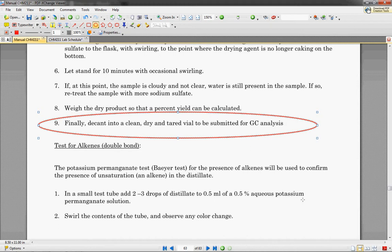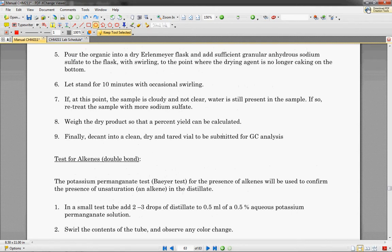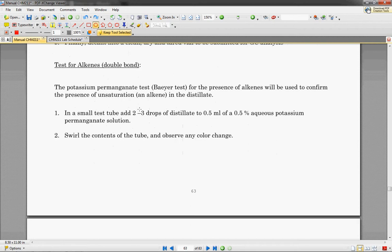Finally, decant it and submit it for GC analysis. We'll give you guys back your analysis, and you can then figure out what you did, what you had, what you got, and compare that to Zaitsev's rule.